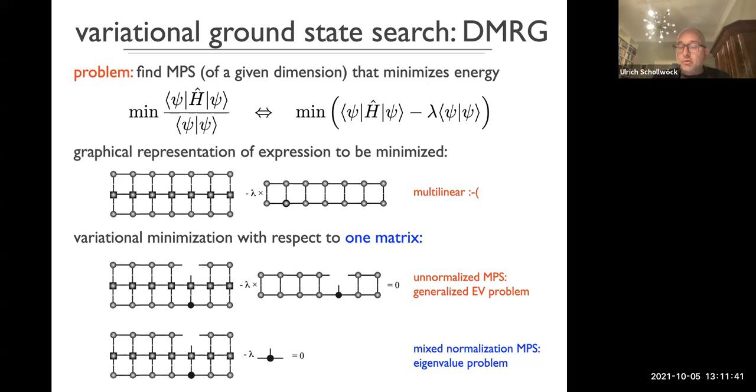This gives you a structure where you have an MPS on the bottom, then you have the H, the MPO, which stands for the Hamiltonian operator. And on top, you have the BRA, which you denote graphically by simply turning the MPS around. If they point up, it's a ket. If they point down, it's a BRA. And so minus the lambda psi psi is then simply this ladder-like structure. Now you want to minimize that. This is a complicated problem because it's highly multilinear in all these matrices. So what you do is you iteratively minimize the energy by picking one matrix after another.